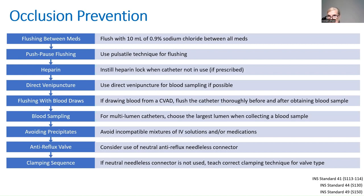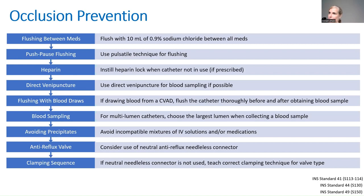Consider an anti-reflux valve for patients who have had occlusions rather than just a neutral or positive/negative connector. Regarding connector types — the most confusing part is knowing when to clamp. INS now recommends organizations be consistent and use one connector type; most are using neutral connectors where clamping sequence is irrelevant. With a positive pressure connector, the fluid is pushed out when you disconnect the syringe, so clamp after removal. A negative pressure connector pulls fluid in, so clamp beforehand.